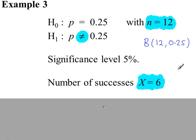Now we need to determine whether we're going to do P(x ≤ 6) from the binomial tables or P(x ≥ 6). We need to know a certain direction — which one do we pick?